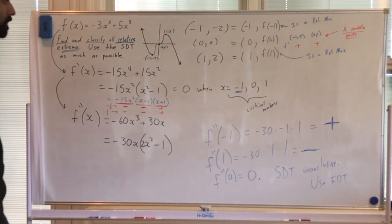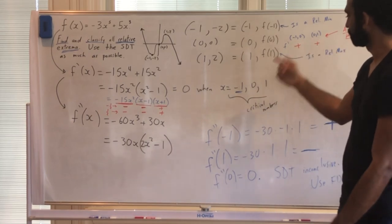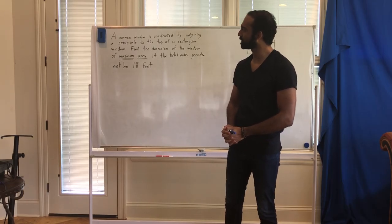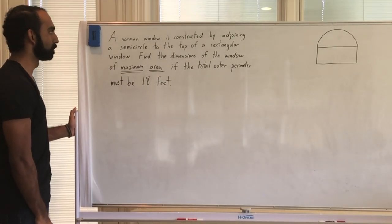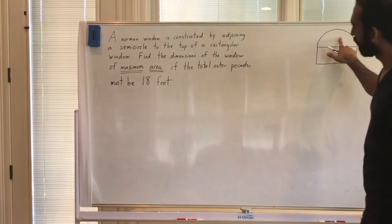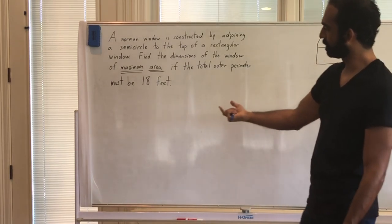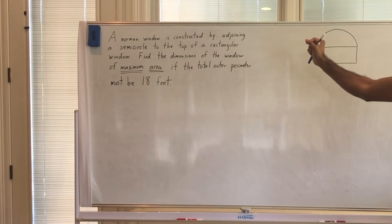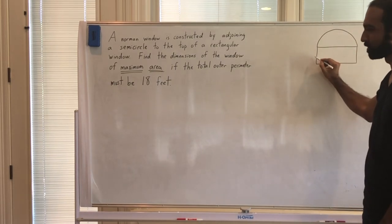Any questions? That is the power of the SDT. If it applies, we have no real interval testing to worry about — except in the rare case when f double prime equals zero. Now let's see the power of the SDT in action on real-world optimization problems. We have a Norman window being constructed by adjoining a semicircle to the top of a rectangular window. Find the dimensions of the window of maximum area if we only have 18 feet of perimeter to work with.